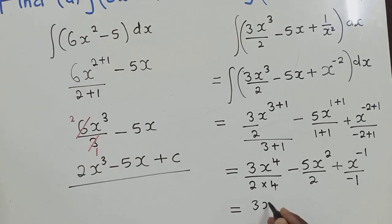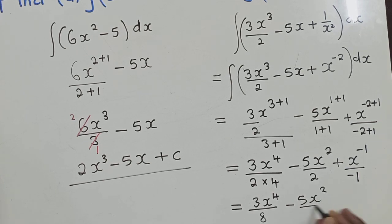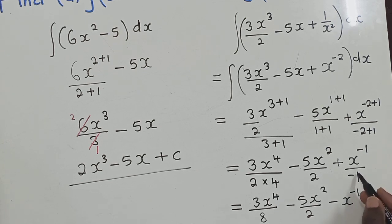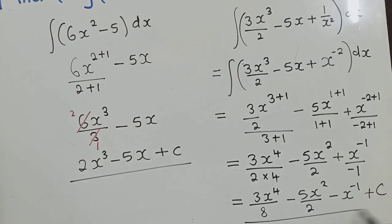Here we have 3X power 4 over 8. Because 2 times 4 is 8. Minus here, we'll copy the way it looks over a 2. Here we have something like this. Because negative, if we divide this negative and positive here will give us a negative. 1 can go into whatever is on top. So this is what we remain with. We even put 1 plus C. So this is our solution.